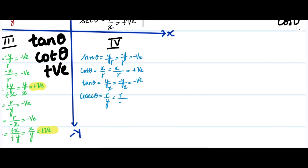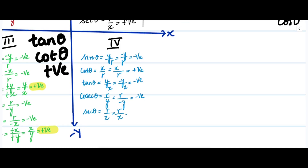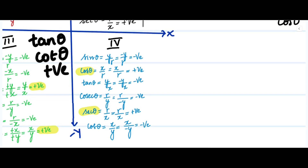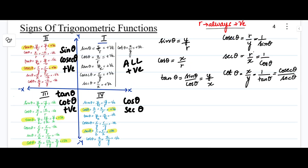Secant theta is r divided by x. R is always positive and x is positive because we have a positive x-axis, so secant theta is positive. Cot theta is x divided by y — x is positive, y is negative — so cot theta is negative. Therefore, in the fourth quadrant, only cos theta and secant theta are positive.